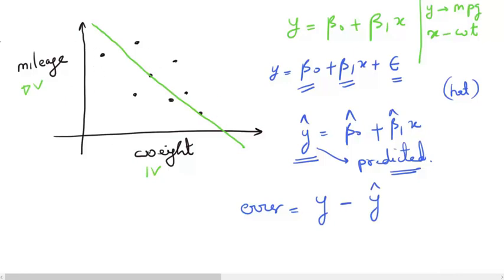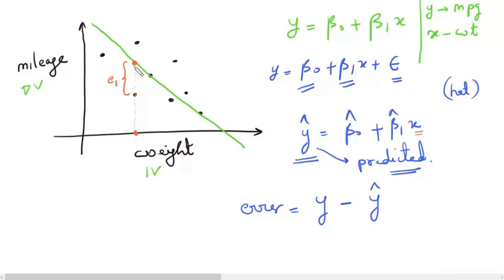Let us find the errors in this chart. For a particular point, we take its x-coordinate and put it into the equation to get ŷ — the corresponding y-coordinate on the line. That is our prediction. Our actual point lies somewhere different, so the error we are making for this point is the vertical distance between the actual point and the predicted point on the line. We call this error e₁.